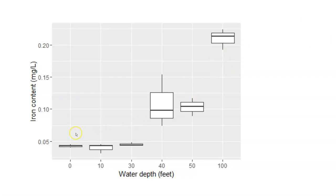At the very low water depths, we can see between 0, 10, and 30 feet, iron content is quite low. At 40 and 50 feet, it looks like they're quite similar.